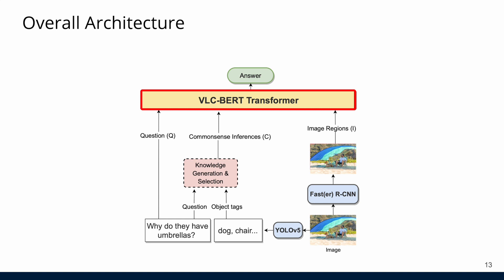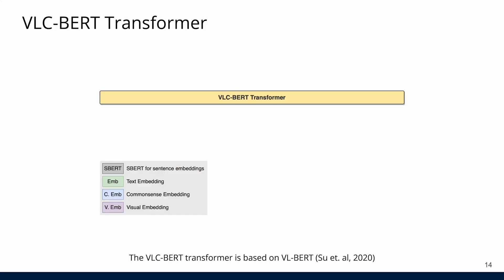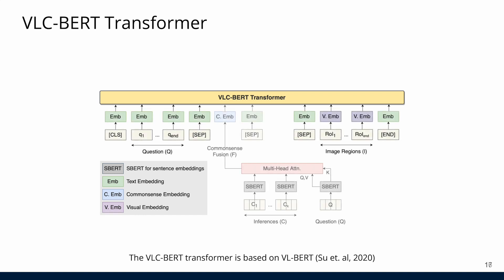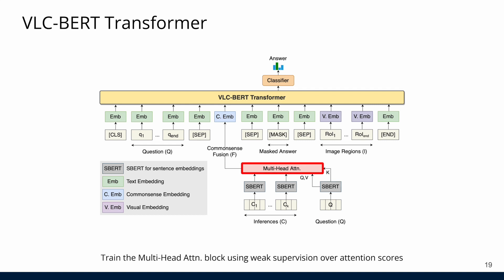Next, let us look at the VLC BERT transformer. VLC BERT, which is based on the VL BERT model, incorporates question tokens, image region features, as well as common sense inferences to predict an answer. We use a multi-head attention component over the inference tokens. This is trained using weak supervision so that the model learns to attend to inferences that are most useful to answering the question while ignoring irrelevant ones.